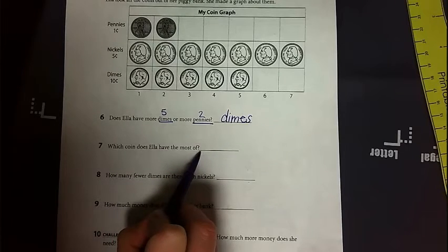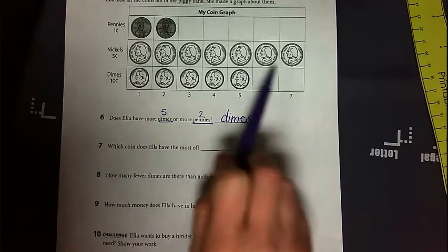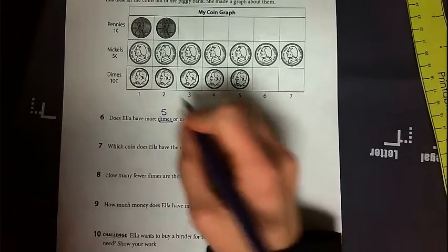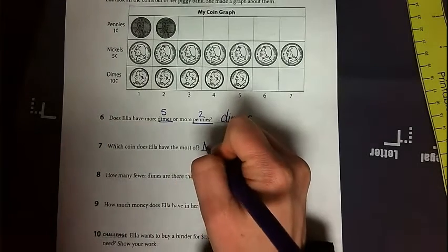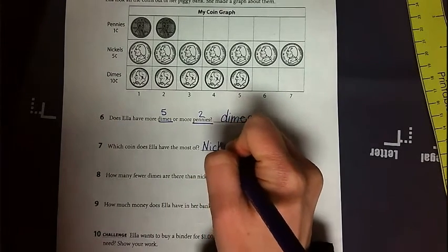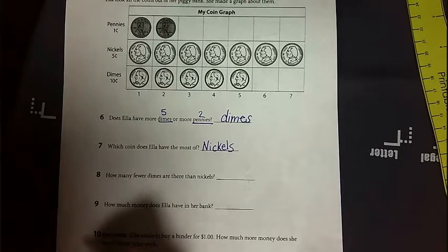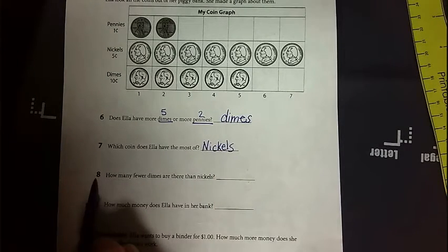Number seven. Which coin does Ella have the most of? So which one does she have the most of? That's right, they're nickels. So I'm going to write nickels. And I'm going to look up here to make sure I spell it correctly. Since the word's on the page, we want to make sure that we spell it correctly.